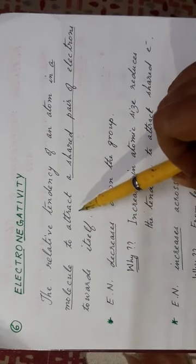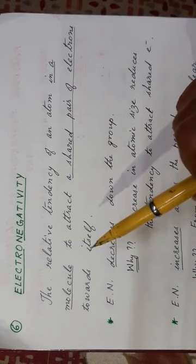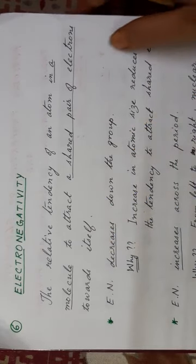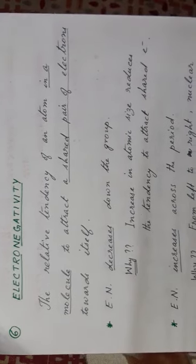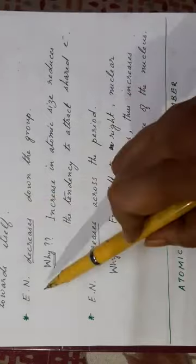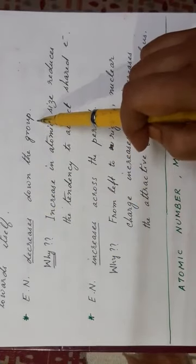The more electronegative atom attracts the shared pair of electrons more towards itself. Now how does it vary in the periodic table? Electronegativity decreases down the group. Now why does it happen?